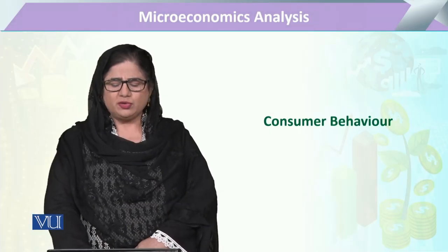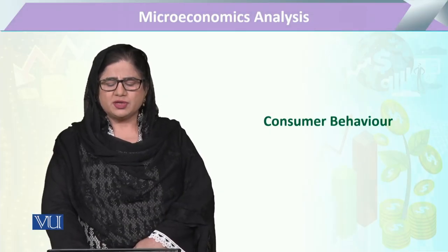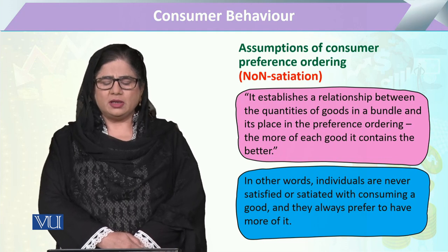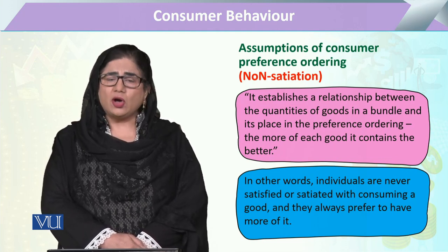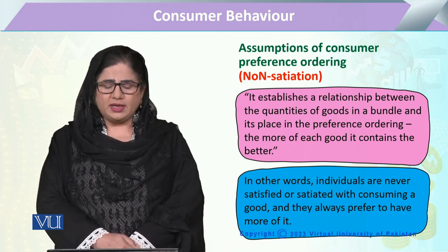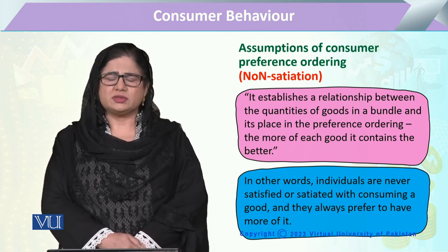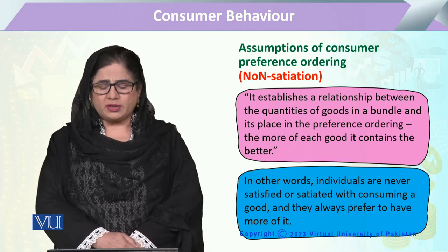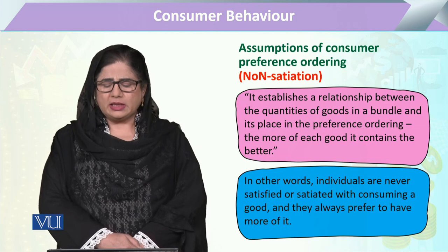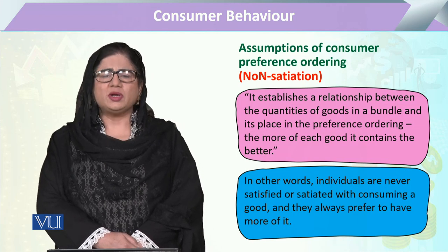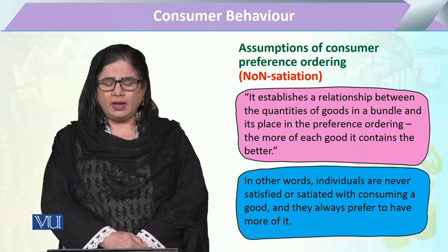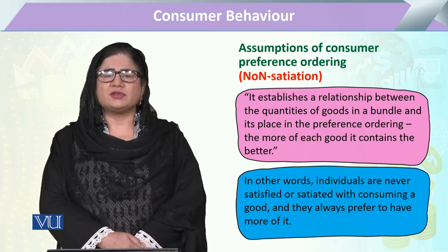In this module, we are going to study the consumer behavior preferences, ordering property: non-satiation. This property basically shows the relationship between the quantities of the goods or services that a consumer is going to prefer in one bundle and its place in the preference ordering.